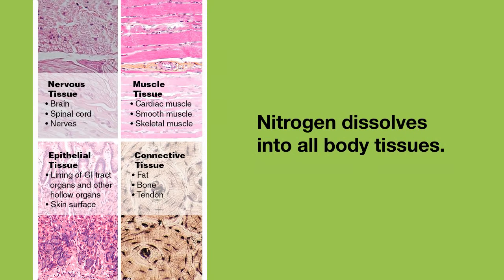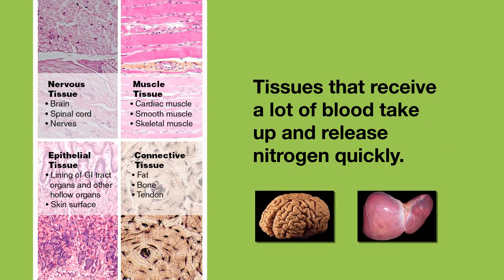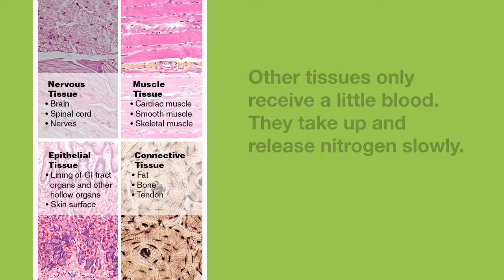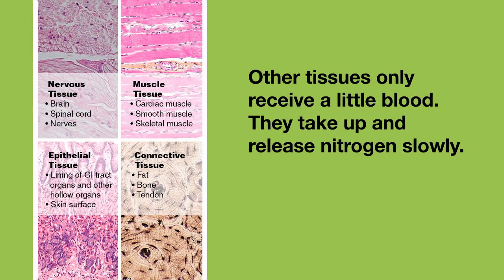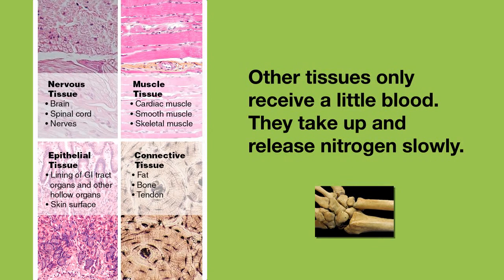Nitrogen dissolves into all your body tissues that receive blood with nitrogen in it. Some tissues that receive a lot of blood, like the brain or the liver, take up and release nitrogen quickly. Other tissues receive only a little blood, like fat or bones, and these tissues take up and release nitrogen slowly.